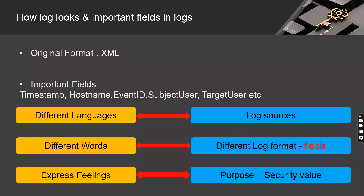How does a log look? Analysis of logs is very important. To understand Windows logs — which are in XML format — there are many fields, but the important ones are: timestamp (when that event occurred), hostname (which host this event occurred on and which user that host belongs to), and event ID. In Windows, event ID is very important. Whenever you perform any activity like login failure, login success, or change password, each event has a unique event ID you can use to understand what happened.